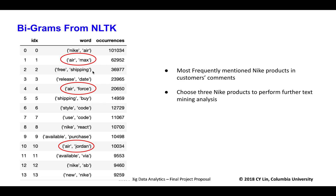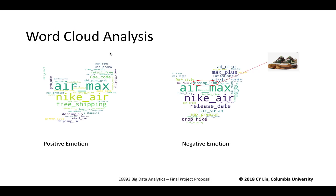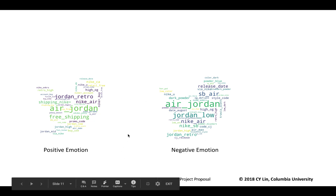Based on our preprocessed data, we performed a bigram analysis for all words occurring in the comments, relating two words together to see better results. We identified the three most frequently mentioned Nike products from customer comments and chose them for text mining analysis: Air Max, Air Force, and Air Jordan. We built a word cloud analysis for Air Max — positive feedback related to free shipping, promotion codes, and availability. For negative emotions, people don't like a particular product, and they care about release date and specific styles. Similar analysis was done for Air Jordan.